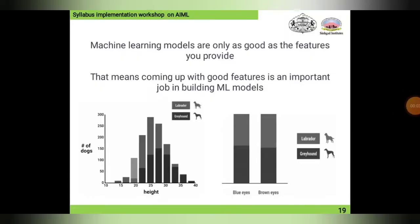Coming to our new topic: feature extraction and feature selection. First, we need to understand what features are. A diagram shows the features of Labrador and Greyhound dogs in terms of height. Various graphs show that a set of 25 to 150 dogs may have Greyhound size, and 150 to 300 represents the height parameter for Labradors. Height is a feature of the dog, and using these sets we can categorize Greyhound and Labrador.